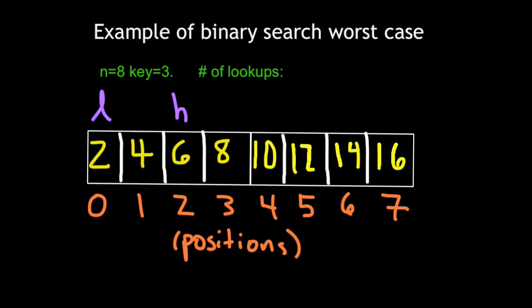So at this point we've made one lookup at 8. We looked at the value of position 3. And now our mid is going to be position 1 since our high is at position 2, low is at position 0. So we check to see if our mid is less than or equal to or greater than the key. It is less than so again we move our high to mid minus 1.